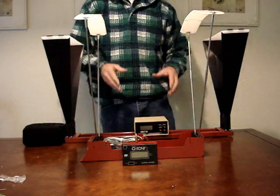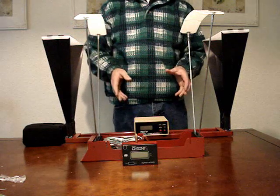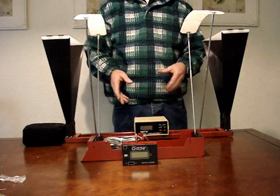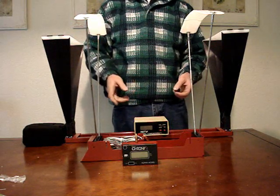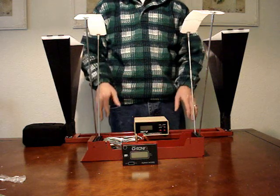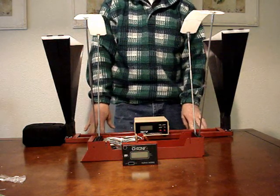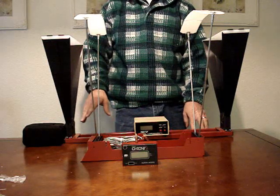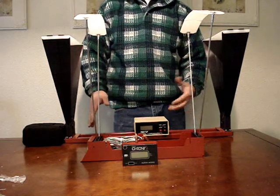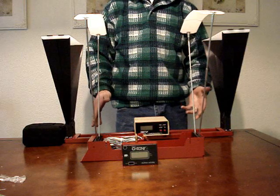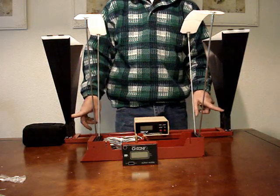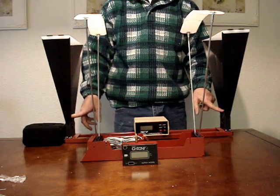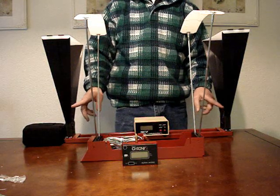The reason is when you're looking at a load book, whether it's the Lyman, Sierra, you name it, they create these loads in laboratory conditions. That laboratory could be at sea level or it could be at 5,000 or 6,000 feet. But what this does is it tells you what your bullets are traveling at out of your barrel and your rifle.